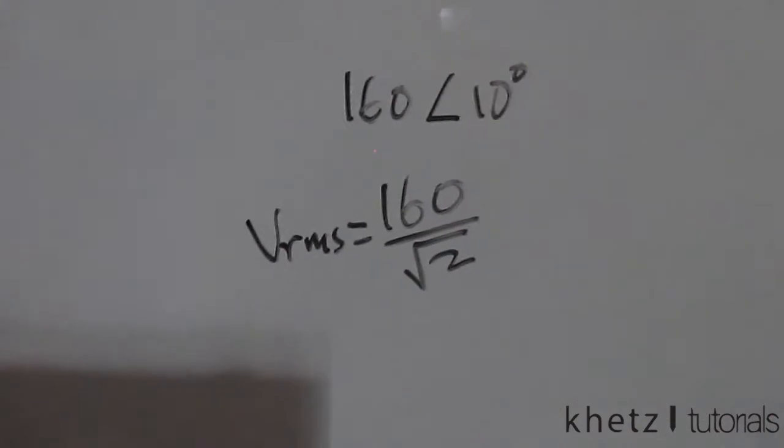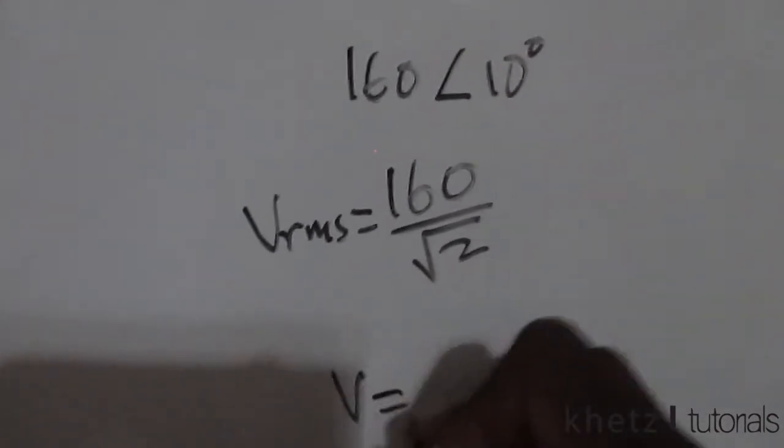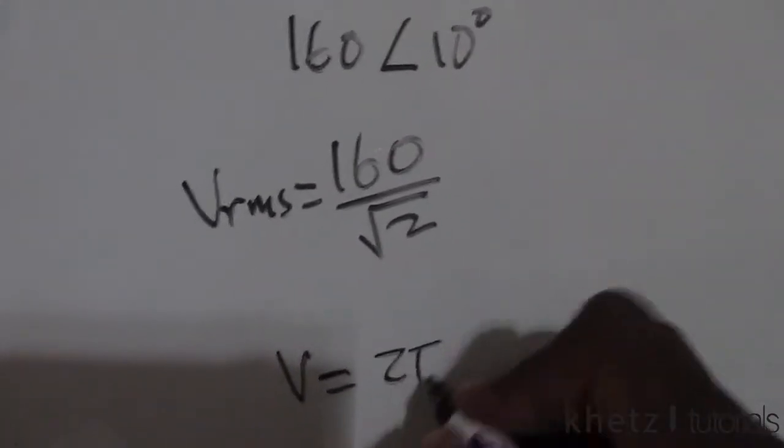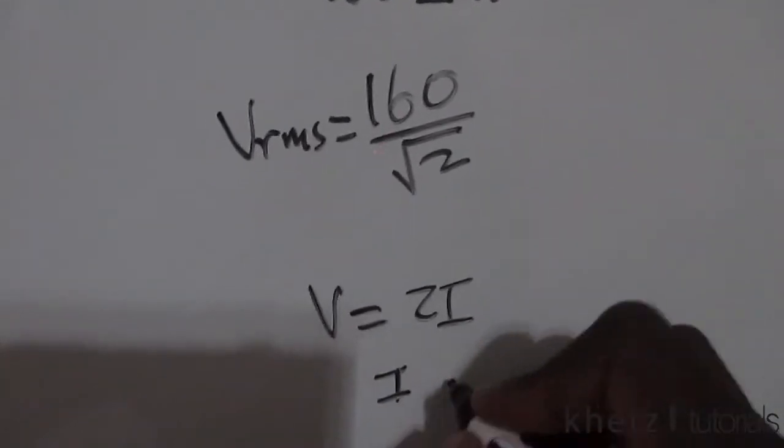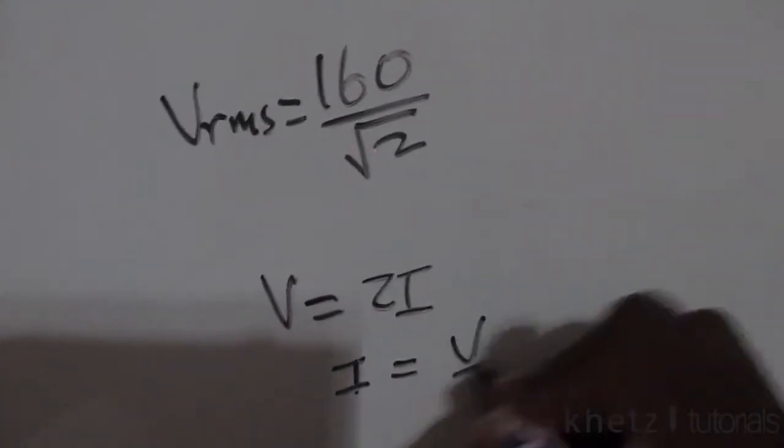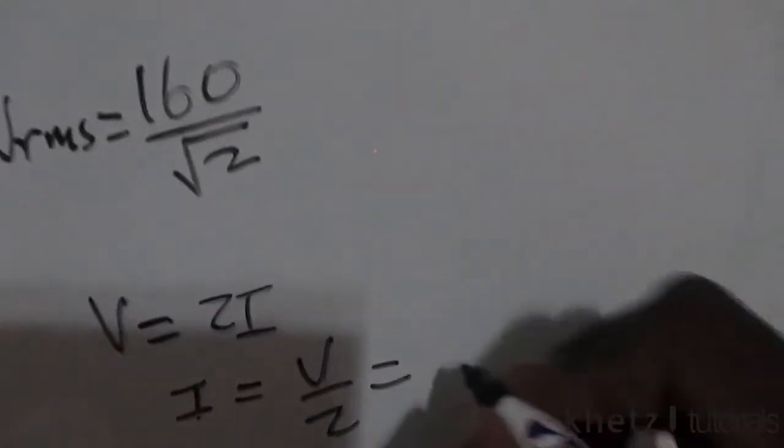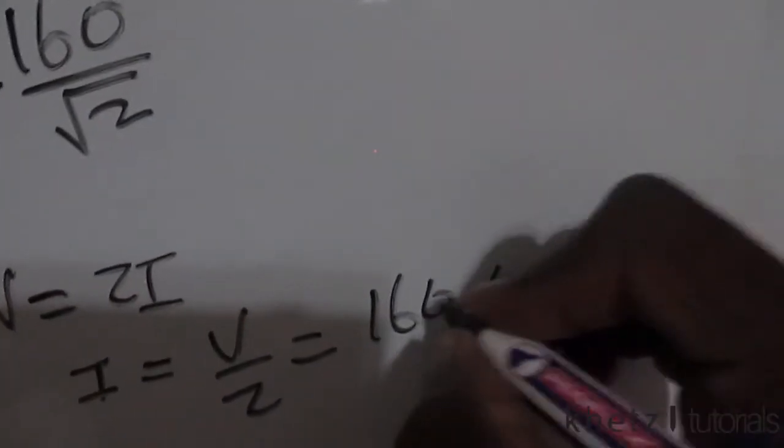So we are going to use the formula V equals ZI. To find our I, we're going to say I equals V divided by Z. So we're actually going to divide 160 with an angle of 10 degrees.